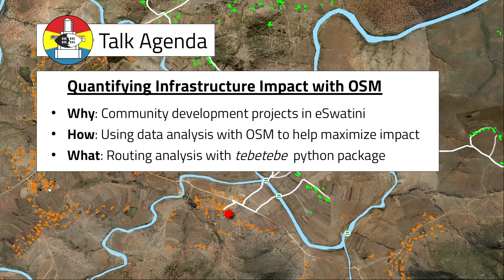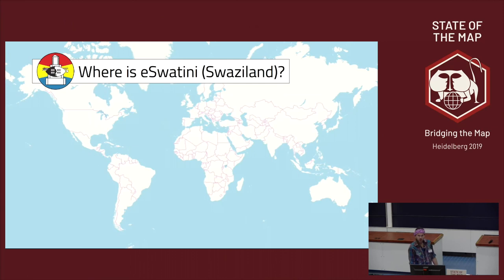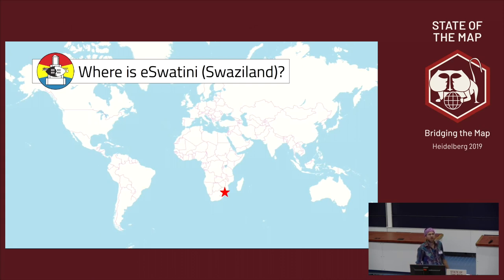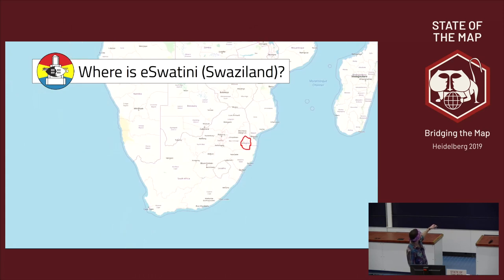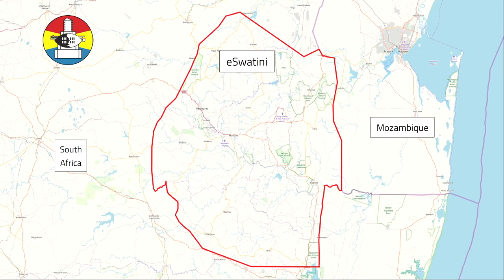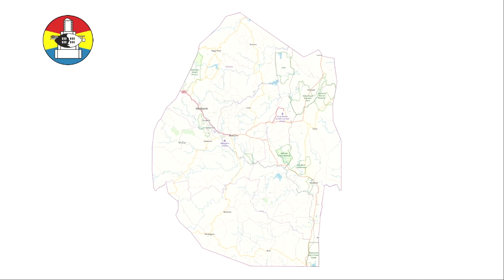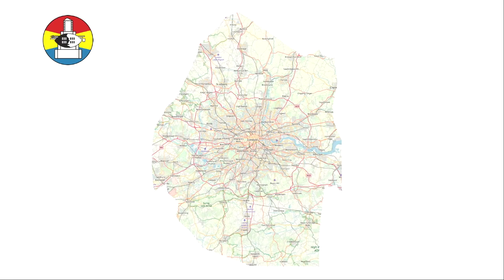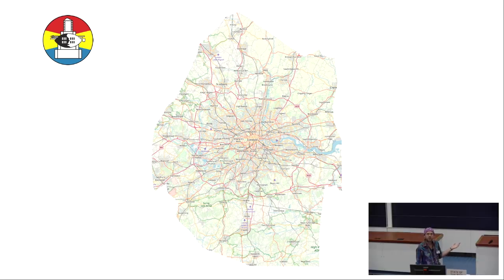First of all, where is Eswatini? I'm curious how many people here know where Eswatini or Swaziland is. For those who don't know, it's down in southern Africa — a cute little country nestled between South Africa and Mozambique. It's quite a small country, about double the circumference of the London metro area, so not huge.